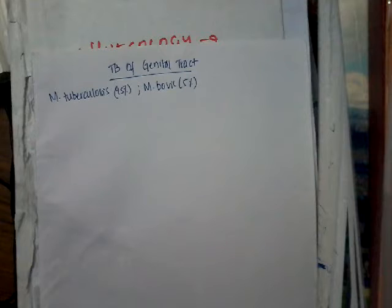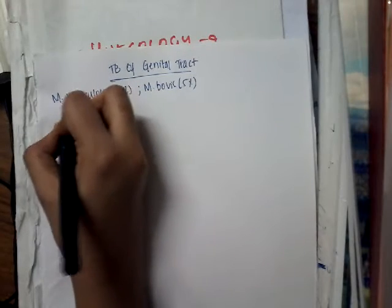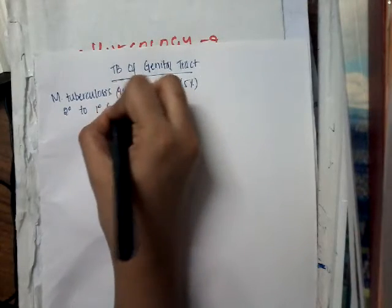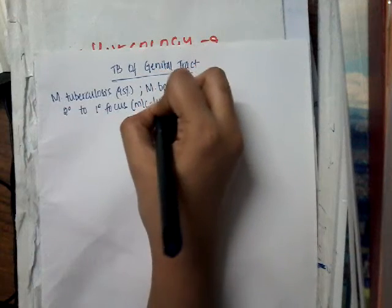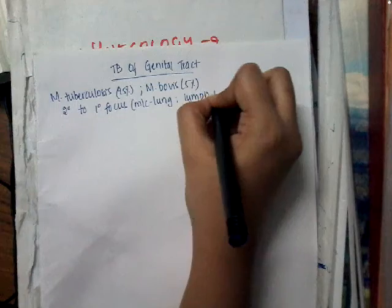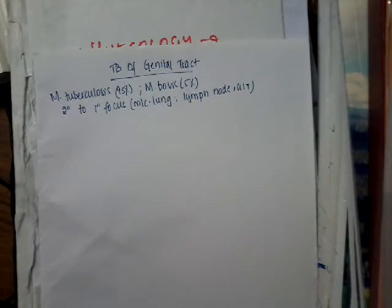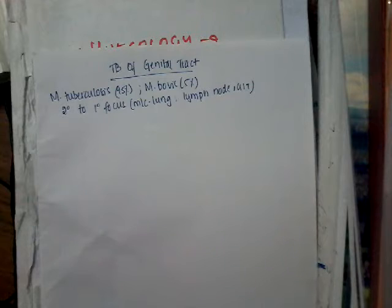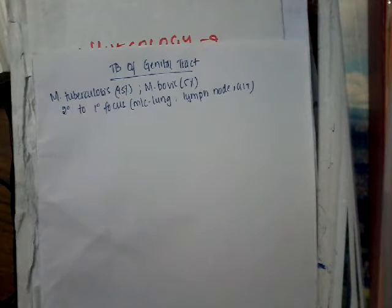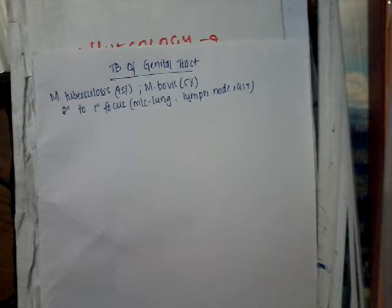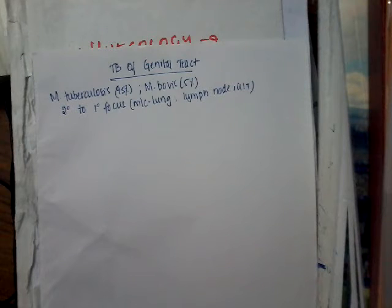Genital tuberculosis is most commonly secondary to a primary focus, with the lung being the most common primary focus. It can also originate from lymph nodes or the GIT. Once the genital tract is colonized, there is first granuloma formation, then caseous necrosis, and finally fibrosis. Active growth of Mycobacterium tuberculosis bacteria also occurs.